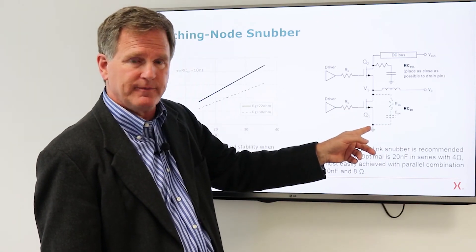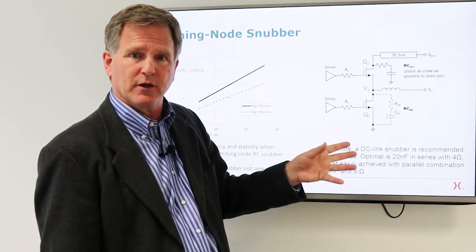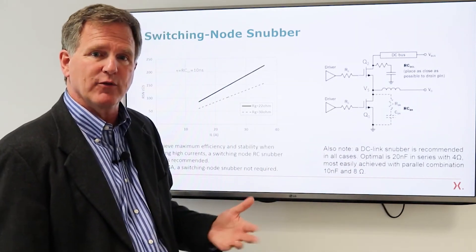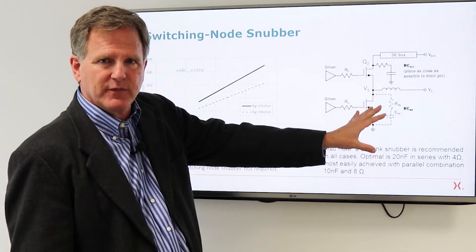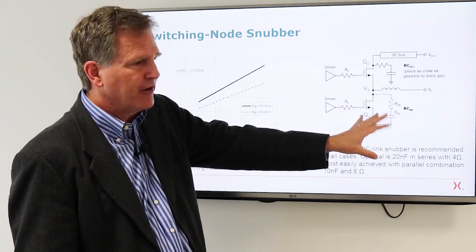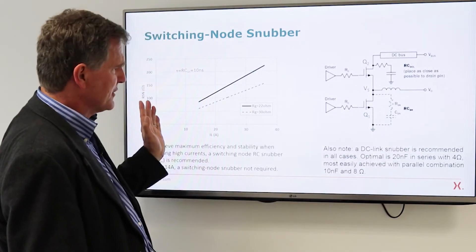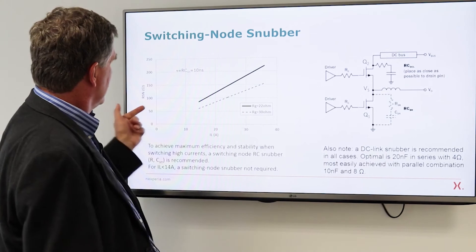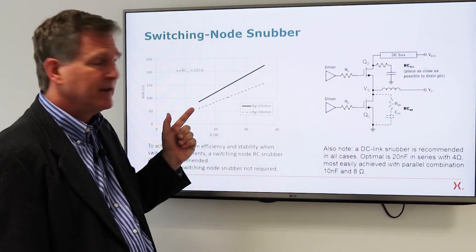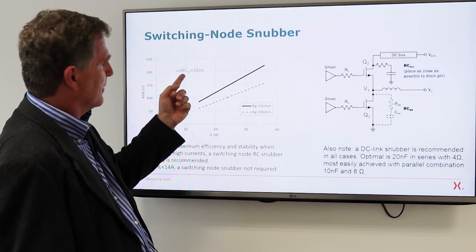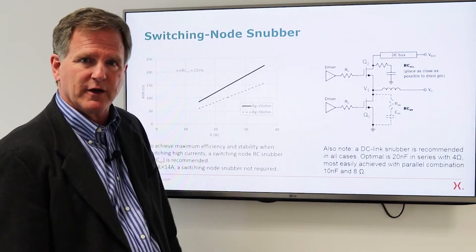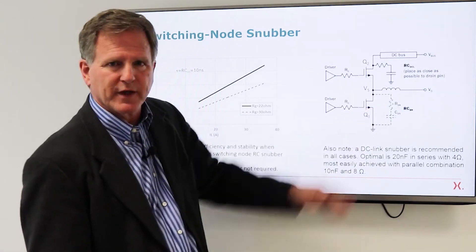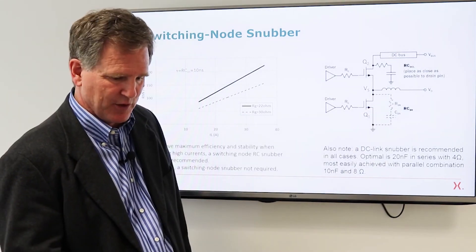That's a good recommendation in any case. For very high currents we'll also recommend an RC snubber at the switching node. Now this will increase switching loss and so we only recommend it at high power levels where it is not really an appreciable element of loss but it does improve stability. And that's what this chart is showing you is as the switch current increases this is the value of snubber resistance we recommend and then a capacitance that gives an RC time constant of 10 nanoseconds. So again for high currents we do recommend using that RC snubber on the switching node.